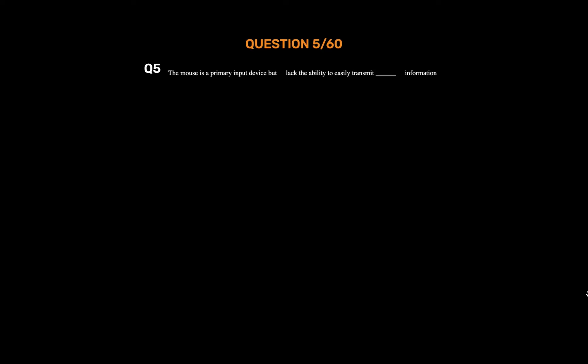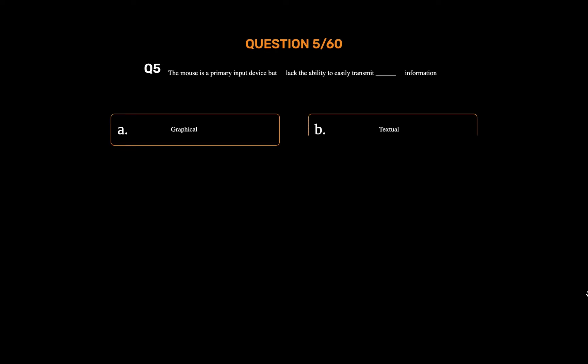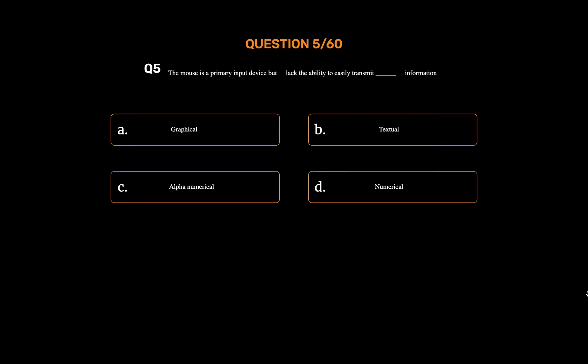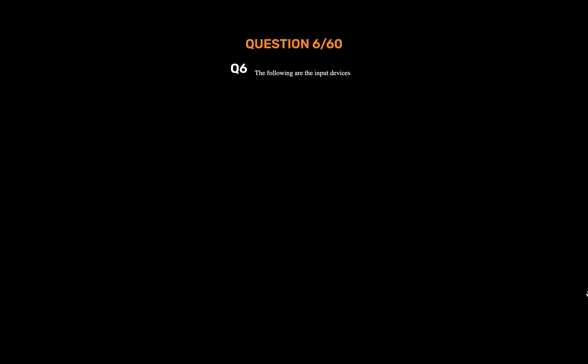Question number five. The mouse is a primary input device but lacks the ability to easily transmit underscore information. Option A: Graphical. Option B: Textual. Option C: Alphanumerical. Option D: Numerical. The correct answer is Option B: Textual.